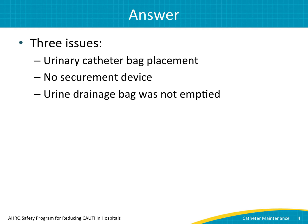You should have identified three issues that can lead to the development of a CAUTI. First, the transporter put the urinary catheter drainage bag, which has a measurable amount of urine in it, on top of the patient. This is dangerous because urine could flow back from the bag into the bladder. Second, the nurse failed to use a securement device to attach the catheter to the patient's leg — not attaching the catheter to the leg can lead to urethral irritation. Third, the drainage bag was not emptied. Emptying the drainage bag will help keep the urine from flowing back into the tubing when the patient is moving.